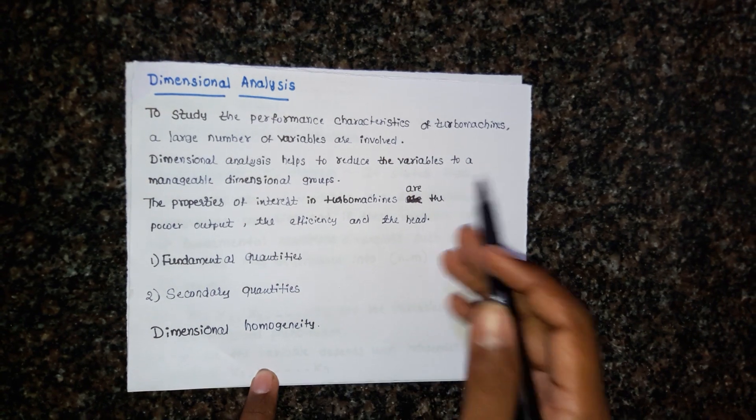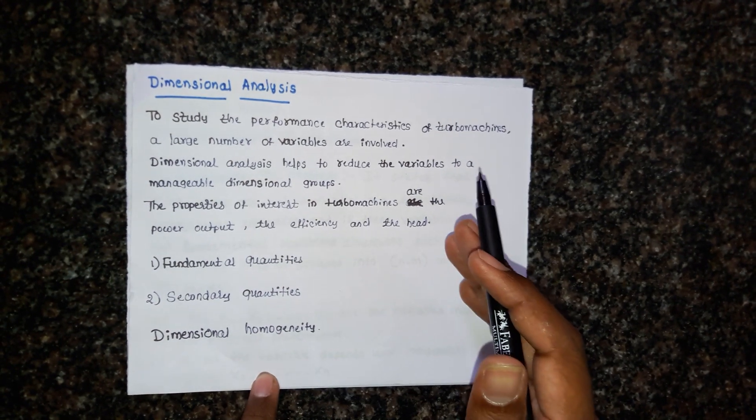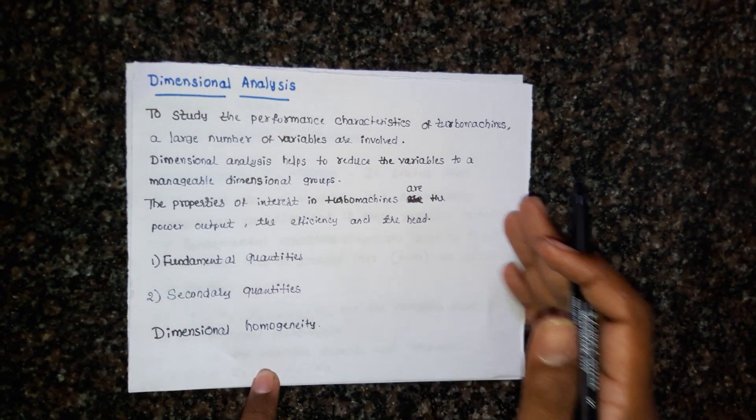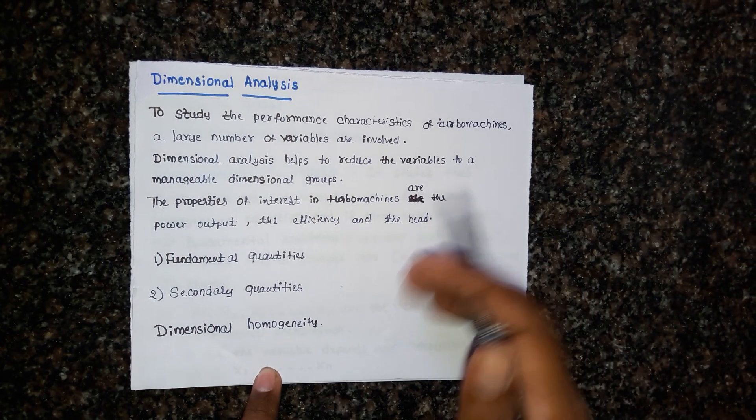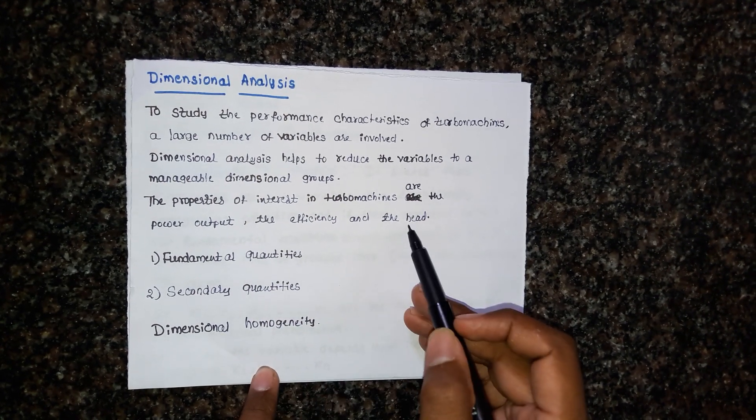Dimensional analysis is used to reduce the variables into manageable dimensional groups. In every turbomachine, the parameters of interest are power output, efficiency, and head.